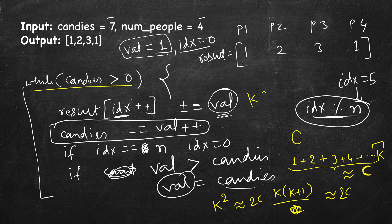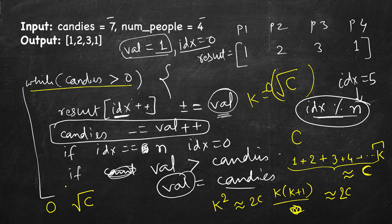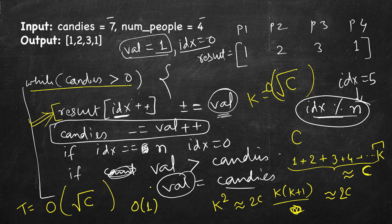So k is approximately √c, meaning the loop runs for O(√c) iterations — that is the time complexity. For space, we only keep track of a few auxiliary variables, so that's O(1). If you count the result vector we have to return anyway, it's O(n), but there's no escaping that. So auxiliary space is O(1) and time is O(√c).